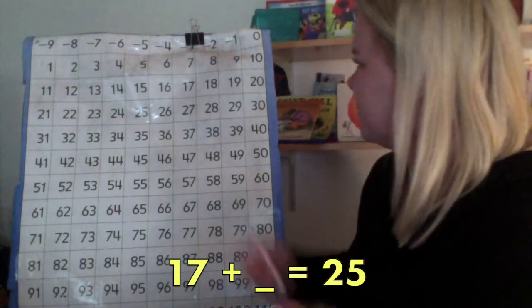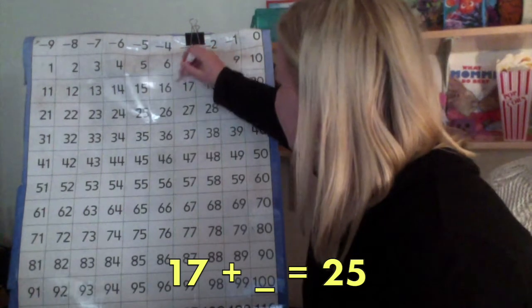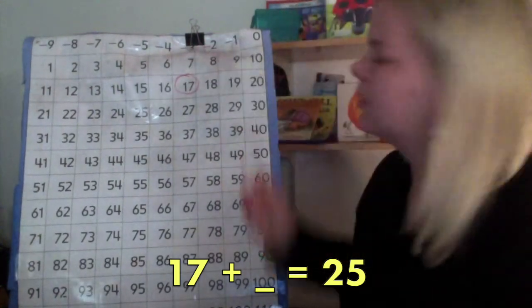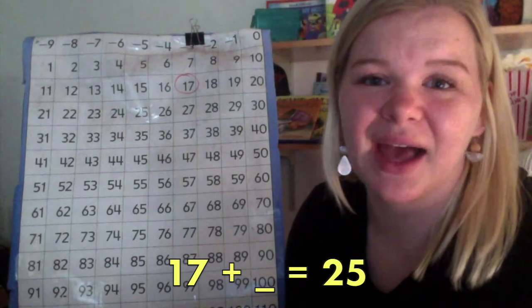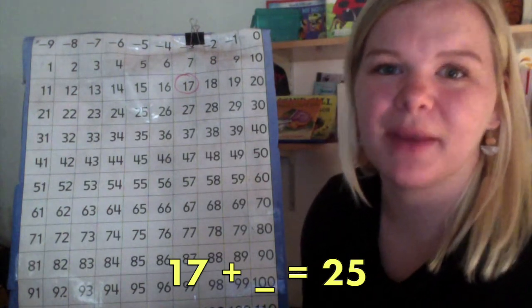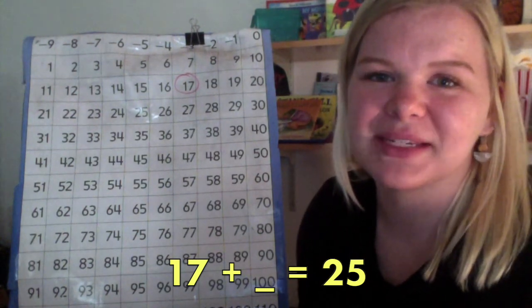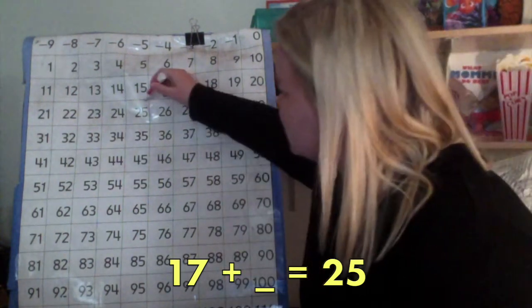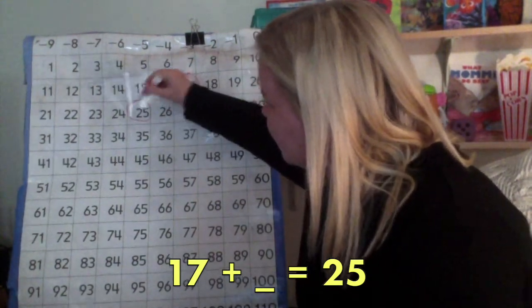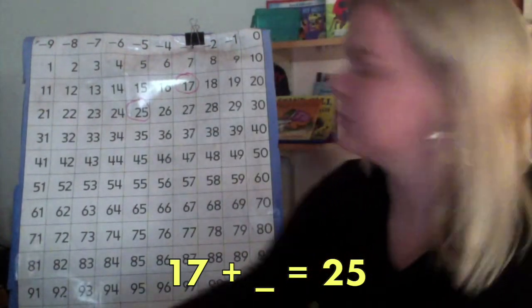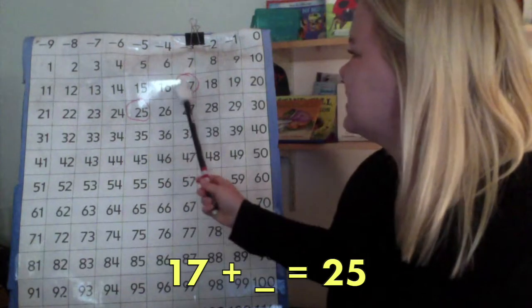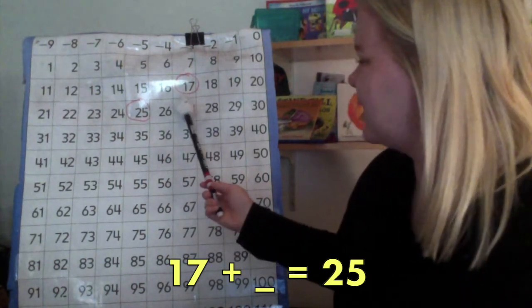So, we'll start with the number 17. And, we're not counting up 25 hops, but we need to see how many hops it takes to get to 25. So, we start at 17 and we count up. How many hops does it take?